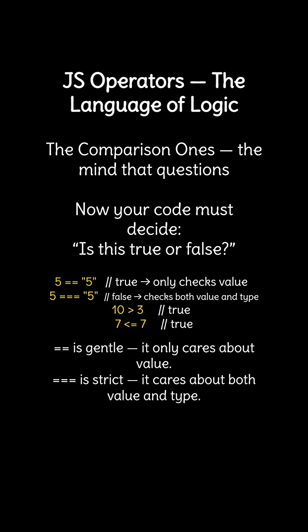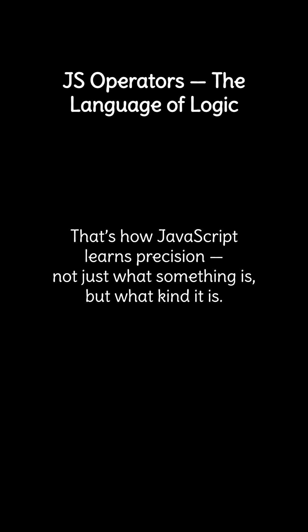Add the comparison ones — the mind that questions. Now your code must decide: is this true or false? 5 double equals string 5 is true — it only checks value. 5 triple equals string 5 is false — it checks both value and type. 10 greater than 3 is true. 7 less than or equal to 7 is also true. Double equal is gentle; it only cares about value. Triple equal is strict; it cares about both value and type. That's how JavaScript learns precision — not just what something is, but what kind it is.